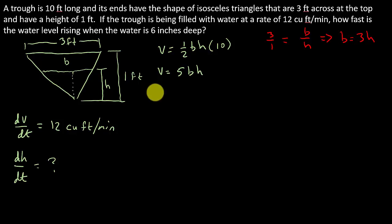So we've got V = 5 times 3h times h, and so we get V = 15h squared. So now let's take the derivative. So we've got dV/dt = 30h times dh/dt. So now we just need to plug everything in.